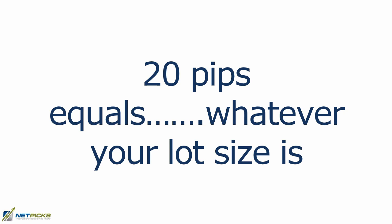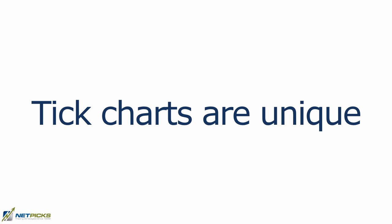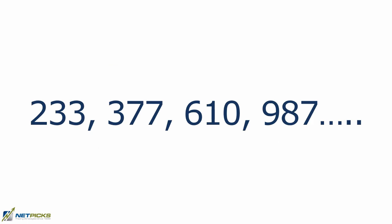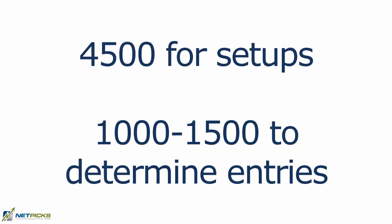Final thoughts: tick charts are unique and only plot when the desired number of transactions takes place. Your choice of tick settings is the deciding factor in how fast they plot. In fast-moving markets with a lot of volume, you probably want a higher setting such as a 2000 tick chart. With a lower setting the price action can be extremely fast and hard to trade. Many traders use Fibonacci numbers to determine settings: 233, 377, 610, 987. You can also do multiple tick chart trading — a high tick setting like 4500 for setups and a lower setting of 1000 to 1500 for entries.